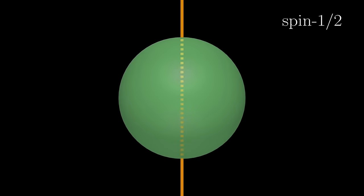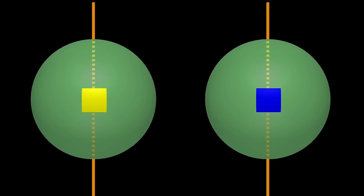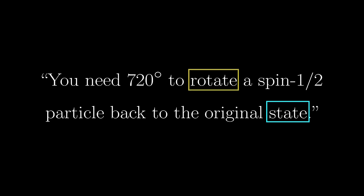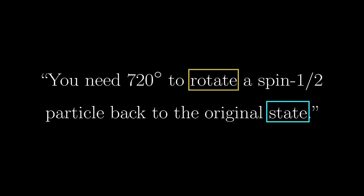You might have heard this bizarre property of spin-1/2 particles: if you rotate it by 360 degrees, it somehow doesn't return to its original state. Rather, you need two full revolutions, or 720 degrees. This sentence is technically correct, but I would also consider it a misconception, because unless you interpret the words 'rotate' and 'state' in the way it's intended, you might get the wrong picture of what's going on. So what do these two words really mean in this context?